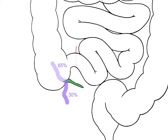In this video, we will only consider a cecum that is in the right iliac fossa. However, be aware that if there has been a degree of malrotation of the gut during development, the cecum may not even be in the right iliac fossa, but positioned elsewhere in the abdomen.